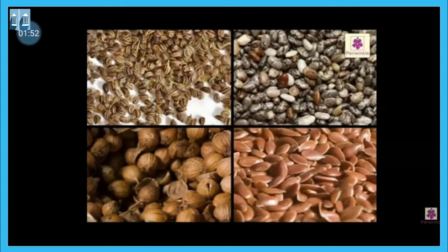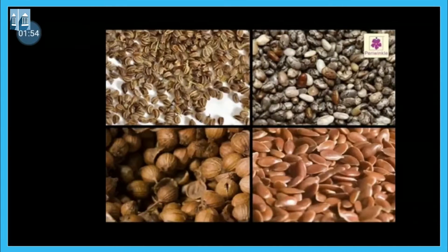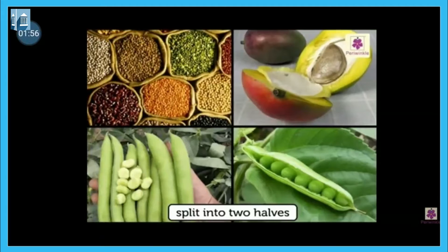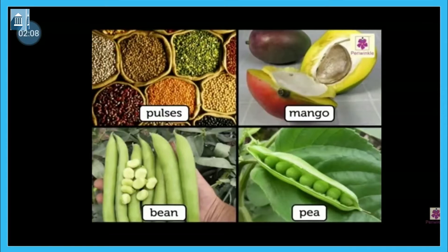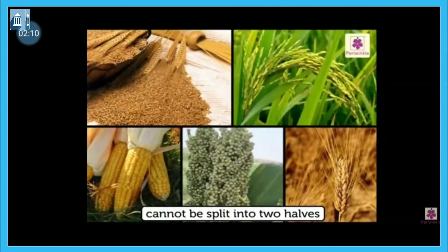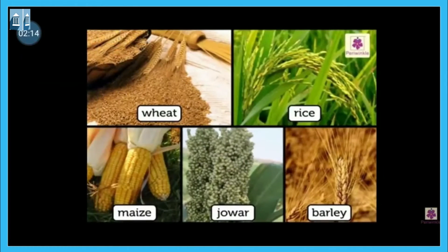Now, some seeds can be split into two halves. For example, pulses, mango, bean, peas — these seeds can all be split into two halves. And some cannot be split into two halves, like wheat, rice, maize, jowar, barley, etc.